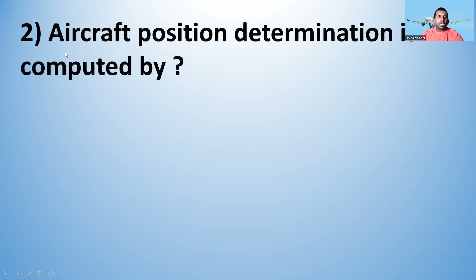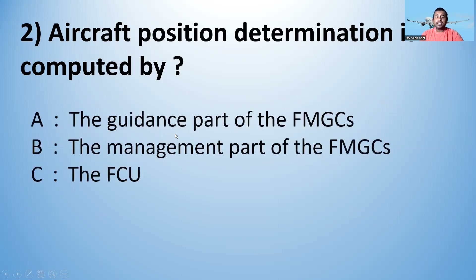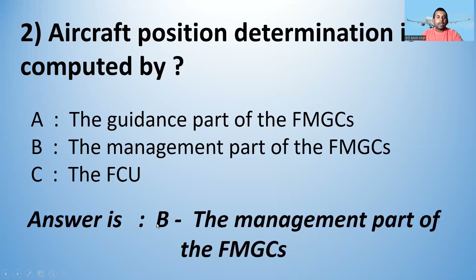Question 2: Aircraft position determination is computed by — A) the guidance part of the FMGCs; B) the management part of the FMGCs; C) the FCU. The answer is B — the management part of the FMGCs.